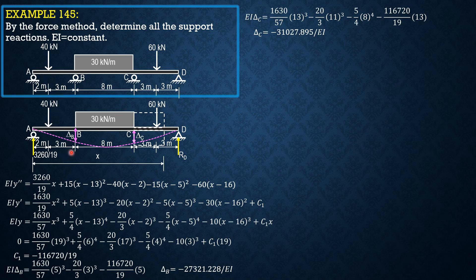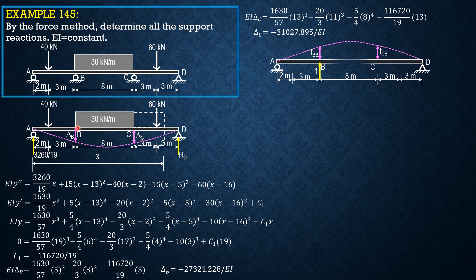Next, we apply a unit upward load at B in the beam. From here we can solve the reaction at A and D. By summing moments about D, the reaction at A is 14/19 — it is downward because the applied load is upward, since 1 times 14 gives the reaction at A as 14/19, and at D it should be 5/19.